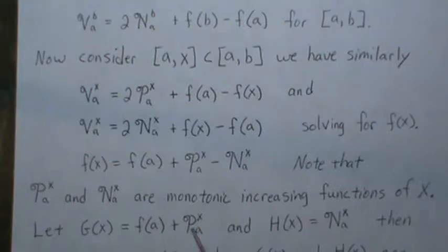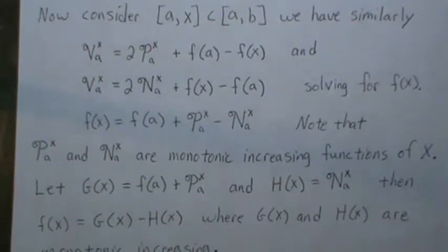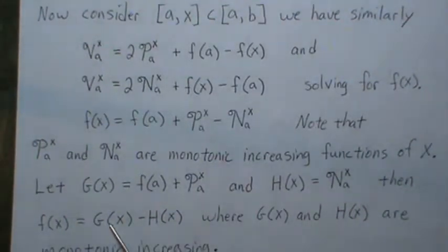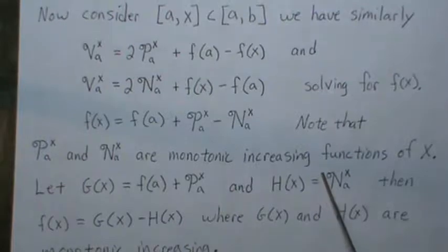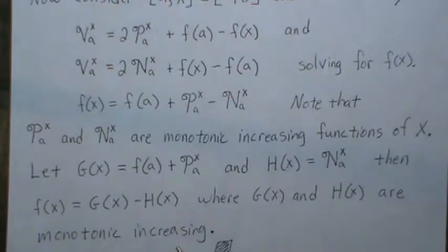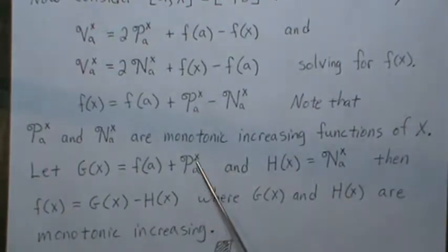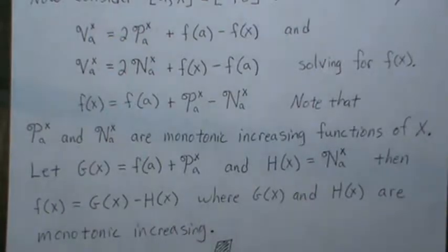Now if we let g(x) equal script-P(a,x) and h(x) equal script-N(a,x), then f(x) can be represented as g(x) minus h(x), where g(x) and h(x) are both monotonic increasing functions. This completes the proof of Jordan's decomposition.